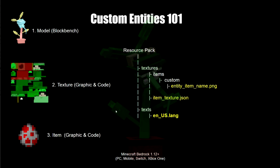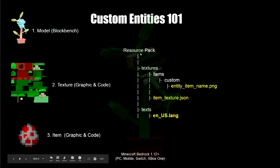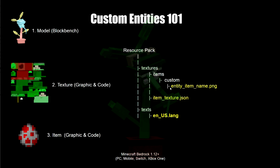Now we need to handle the item texture. Under the resource pack we've got textures > items > custom > entity item name — this is the PNG, the icon we're going to use as our spawn egg. Under textures we also have a file called item_textures.json, which is very important — this is where we list every single item texture we add so that Minecraft can reference it.